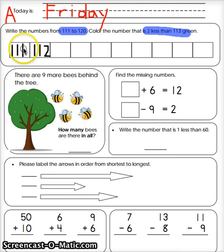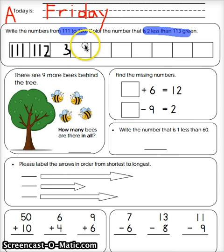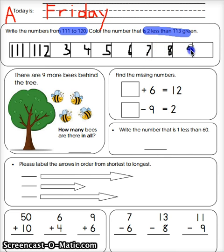You can just write the last number first. Este último número es bien fácil porque nomás va uno, dos, tres, cuatro, cinco. You can write the last number because it just goes one, two, three, four, five, six, seven, eight, nine, ten. Nice and easy. Y ahora nomás regresamos y ponemos el once en frente. Then we go back and we put the 11 in front.